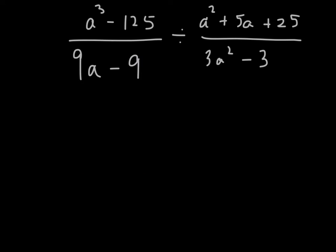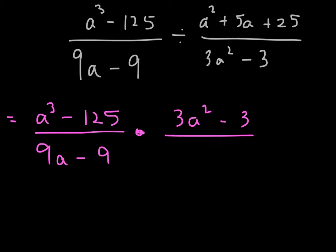So really, this problem turns out to be a cubed minus 125 divided by 9a minus 9. Now, we're going to change this to multiplication and then flip the second fraction. So 3a squared minus 3 over a squared plus 5a plus 25. That's KCF.